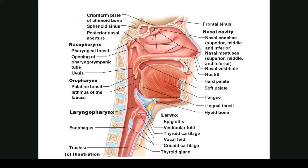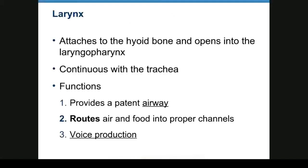Here you have your esophagus, and then this is your larynx and trachea. You have a passageway, and your epiglottis is going to route air into the larynx. The epiglottis routes air and food — hopefully food stays toward the esophagus and air goes into the larynx. The larynx attaches to the hyoid bone and is continuous with the trachea. It provides an airway, routes food, and is also responsible for voice production.